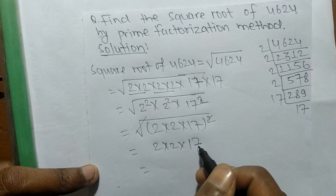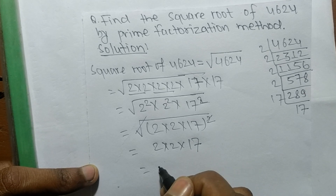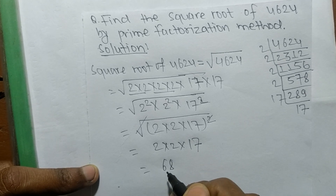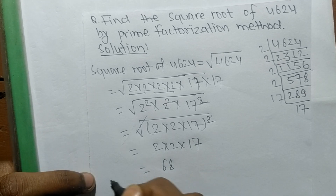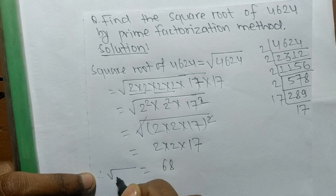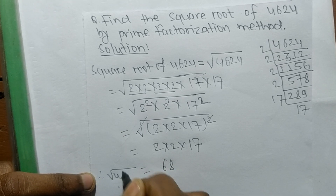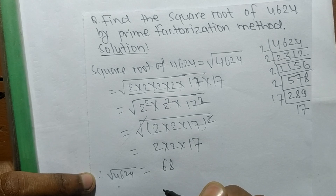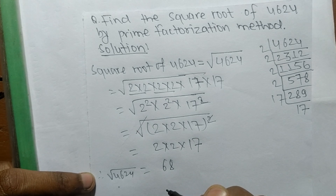Multiplying all these numbers: 2 into 2 into 17 equals 68. Therefore, the square root of 4624 is equal to 68.